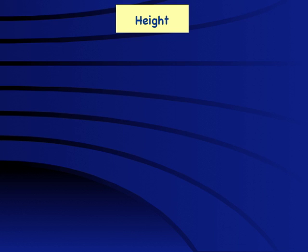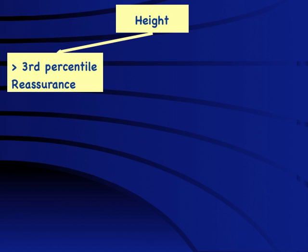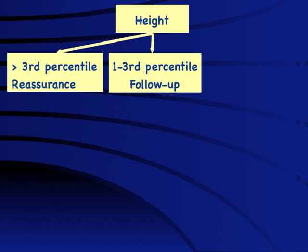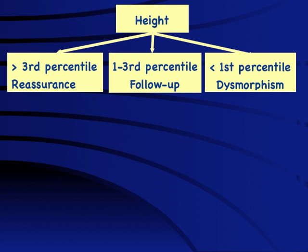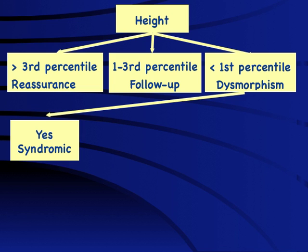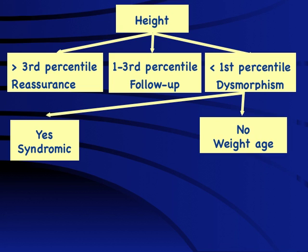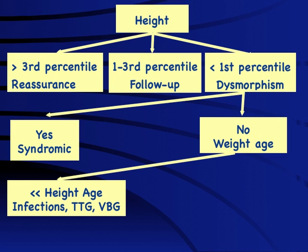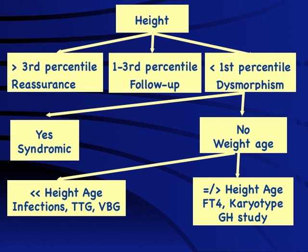In evaluating a child with growth failure: if height is above the third centile, nothing further is needed; between first and third centile, follow up; below the first centile, screen for dysmorphism. If dysmorphism is present, it suggests a specific syndrome. If absent, look at weight age — if weight age is predominantly affected, consider malnutrition and nutritional causes like infections, celiac disease, and renal tubular acidosis. If weight age is equivalent to height age, evaluate thyroid function, karyotype, and growth hormone.